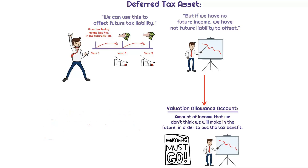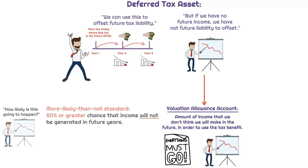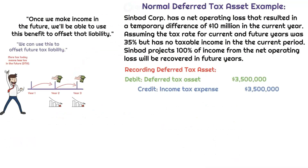So how are they going to make the determination as to whether or not they're going to make money in the future? Nobody predicts the future. They're going to use what's referred to as the more likely than not standard — basically saying that more likely than not, we're not going to generate any profits in the future. We're not going to worry about determining this threshold too much on the CPA exam, but just wanted to give you an idea of how this works in the real world. So let's talk about how we record this. Let's say this company has an operating loss that results in a temporary difference of $10 million.